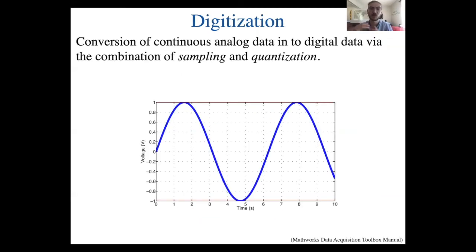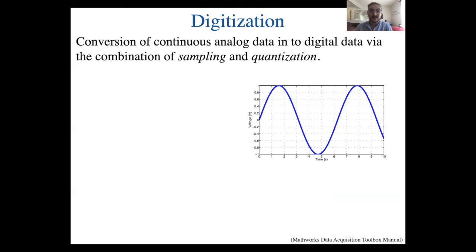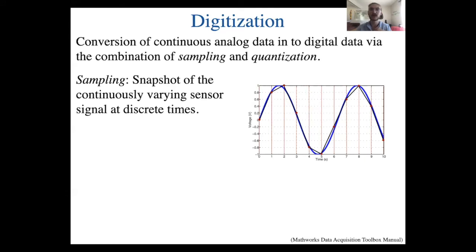Sampling involves creating a discrete set of times at which we store the value — like taking a snapshot at specific points in time. This happens on the x-axis of our graph. In our example we are sampling every single second, so the sampling rate is 1 Hz — we take a value of our data every single second.